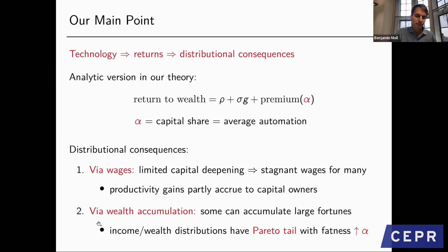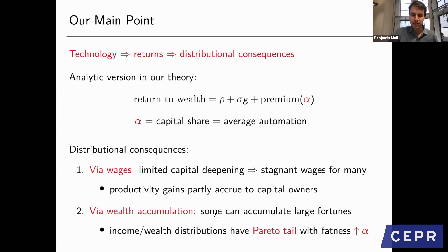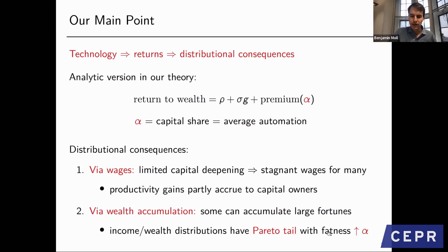A second effect operates at the top of the income distribution via wealth accumulation. Because automation increases returns to wealth, people who already have some wealth—who own part of the capital getting more productive—are able to accumulate large fortunes. Both the income and wealth distributions will have Pareto tails, and the fatness of these Pareto tails is increasing in the capital share. So when the capital share goes up, the personal income and wealth distribution gets more dispersed.